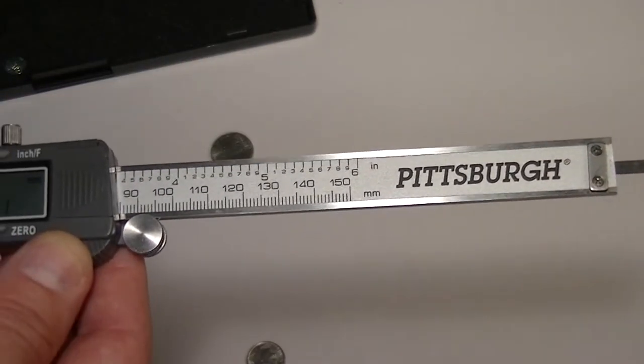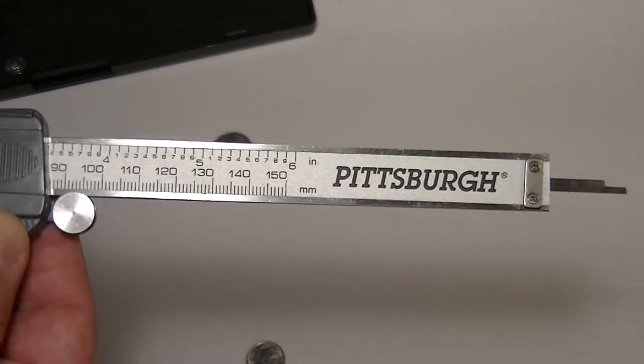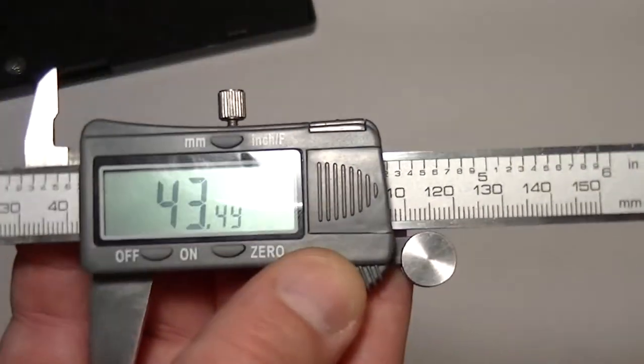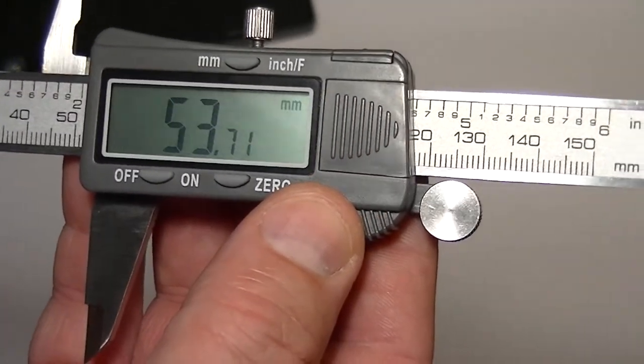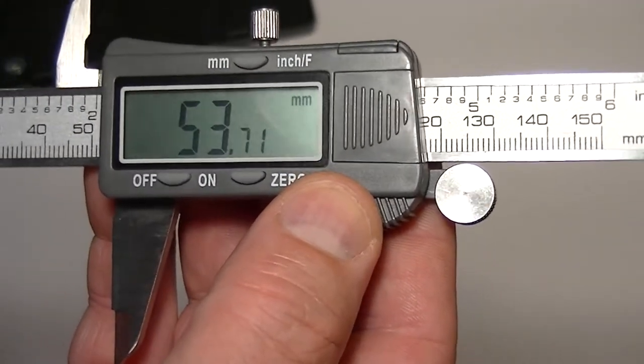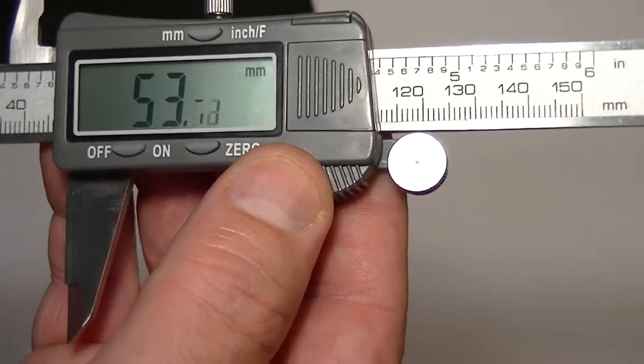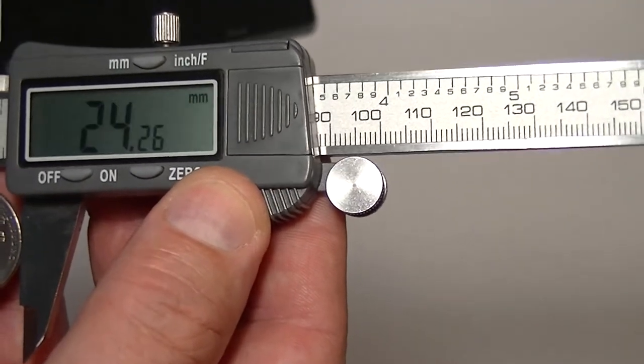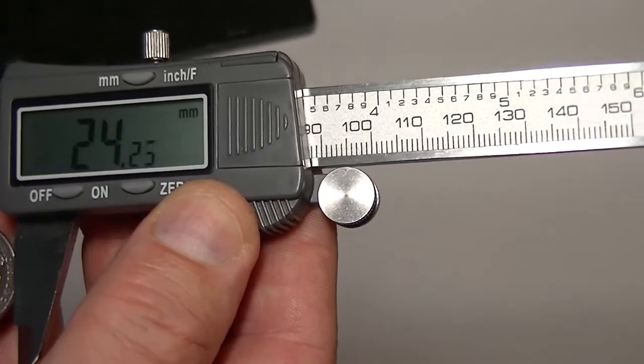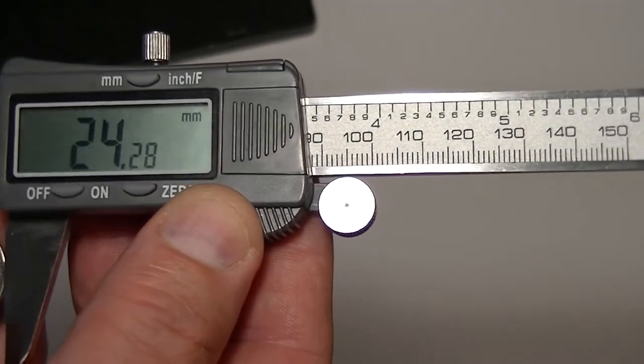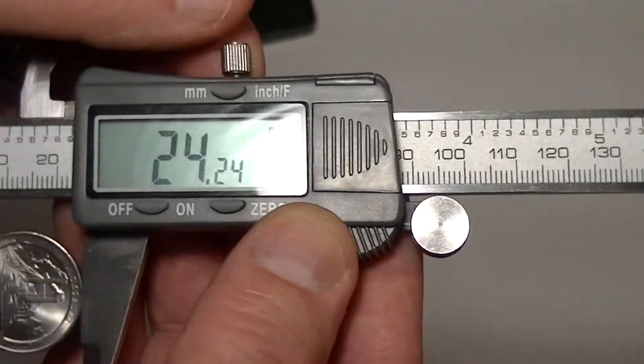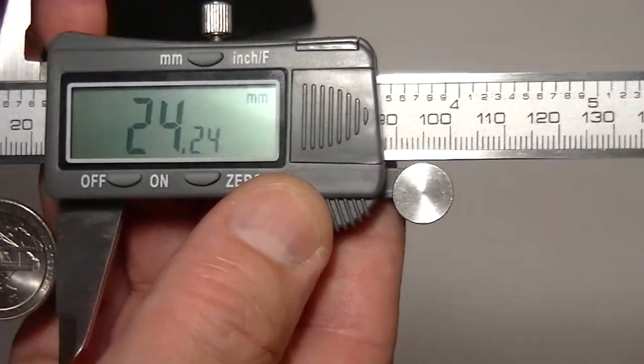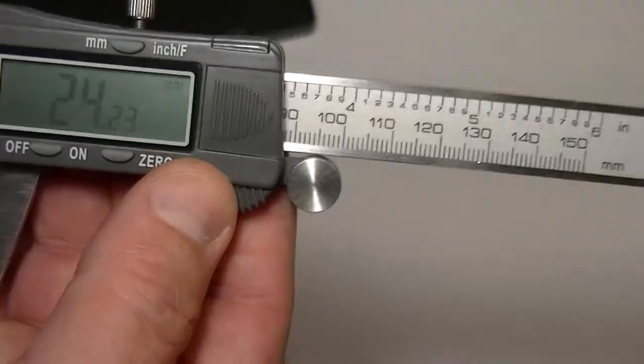If I had a brand new nickel, I could be sure that it was the right diameter, but I don't. Let's do a quarter. So back to zero. It's zeroed out. So a quarter is supposed to be 24.26 millimeters or .955 inches. And I'm getting 24.24. Pretty accurate, I would have to say.